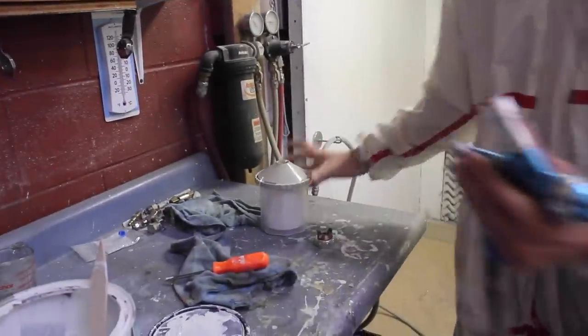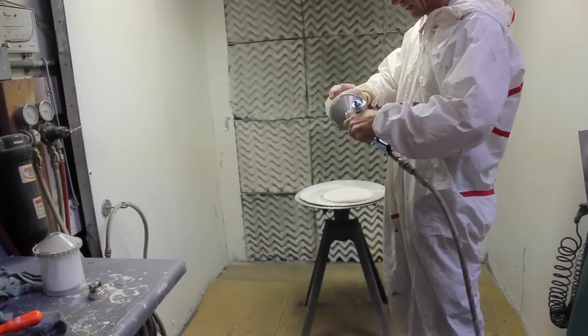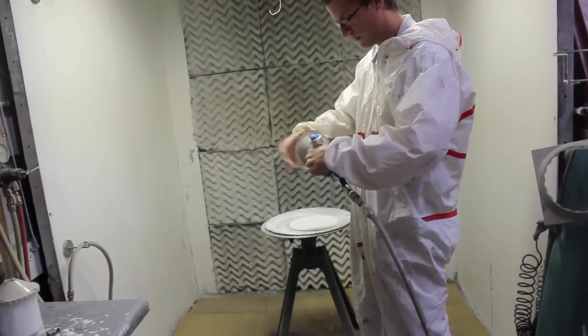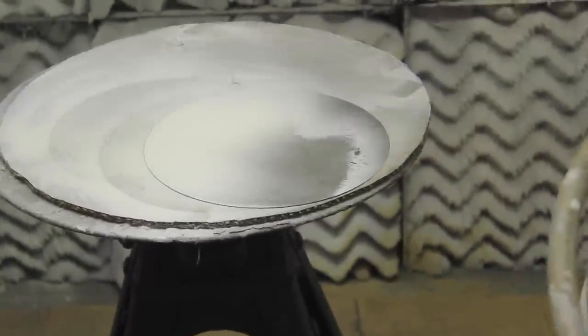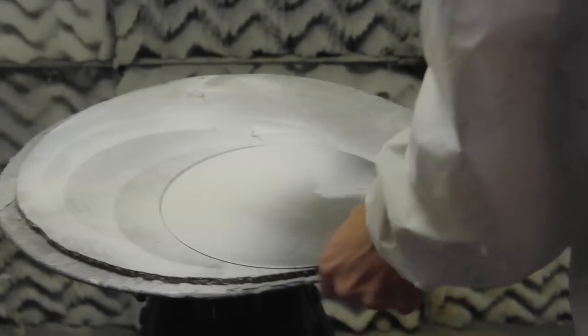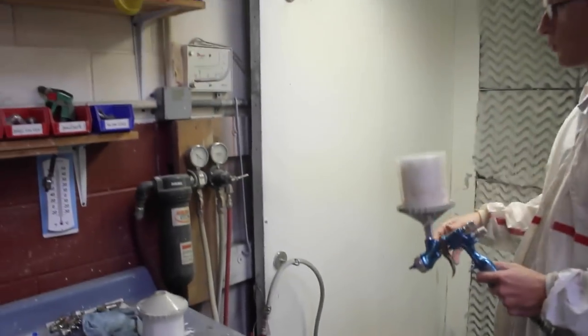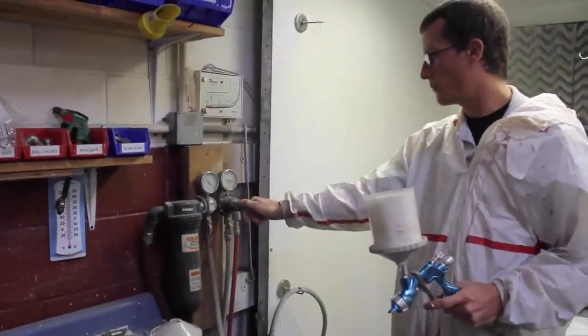I've gone ahead and thinned the same material about ten to fifteen percent. Even thin, I'm still getting a little bit of boulders in my spray pattern here. I could continue to thin this material until I got an easier pattern. But in this case, I'm going to go ahead and go to the next possible way I can make this material break up better, and that's to increase air pressure.